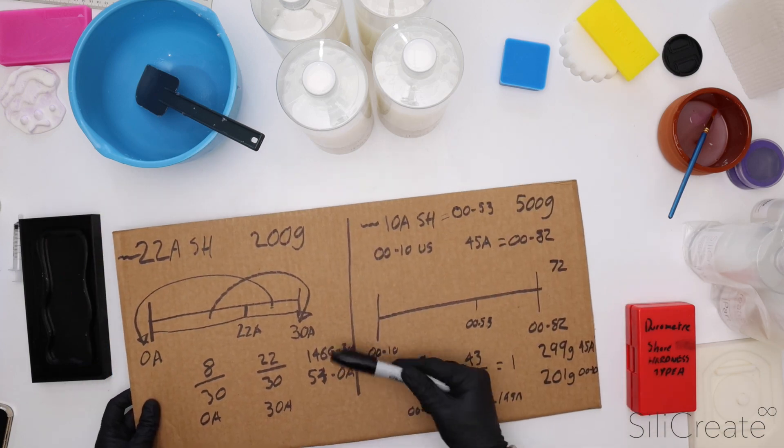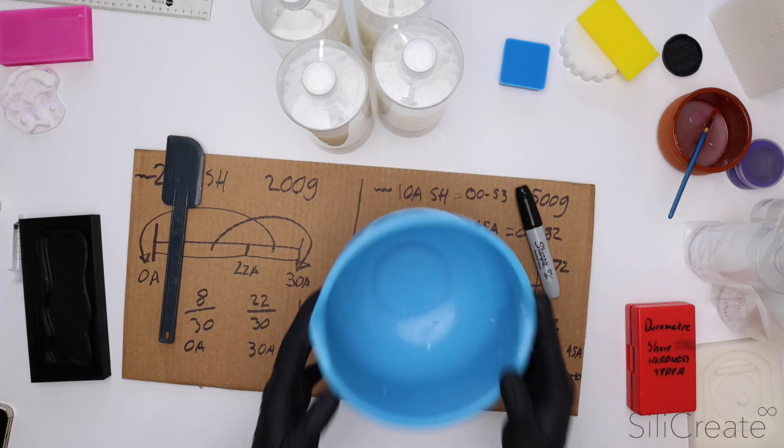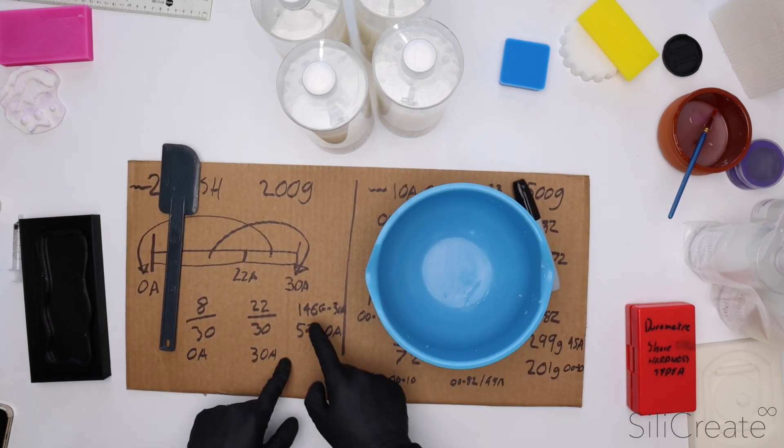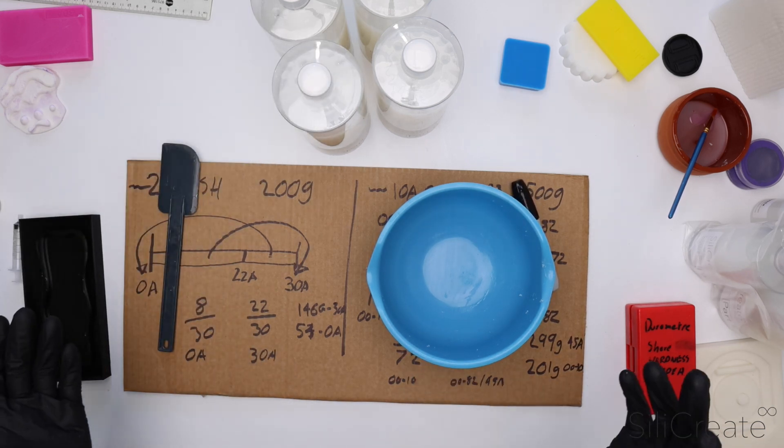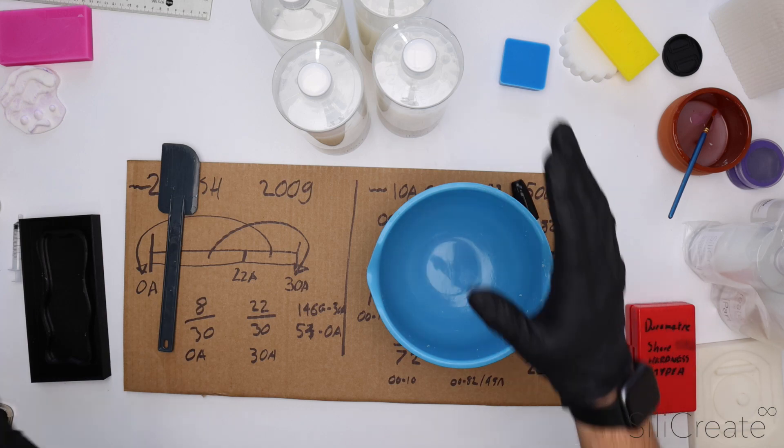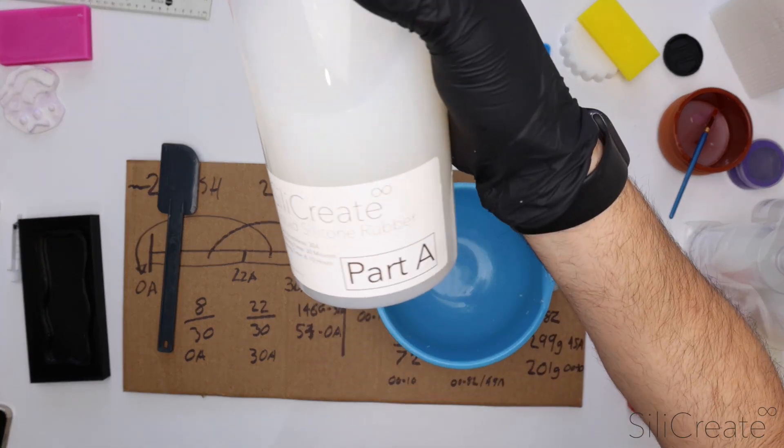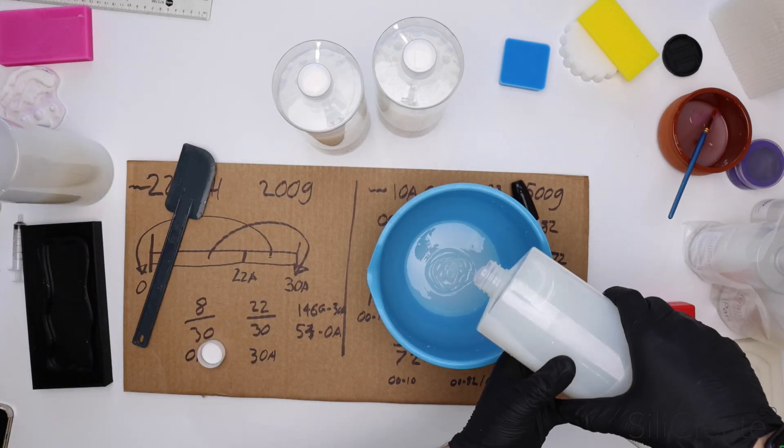So yeah, anyway, let's get on with this. So we've got our mixing bowl here. I've got some scales and yeah, let's mix it up to these ratios. And so we know we're going to need 146 grams of the 30A. So what will this be? 73 grams of the A and 73 grams of the B. I've got the 30A part A here.